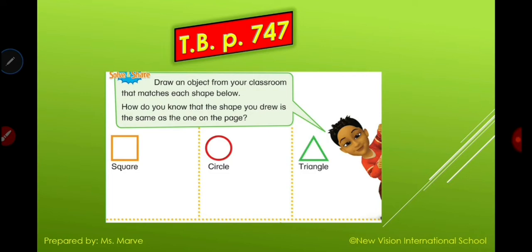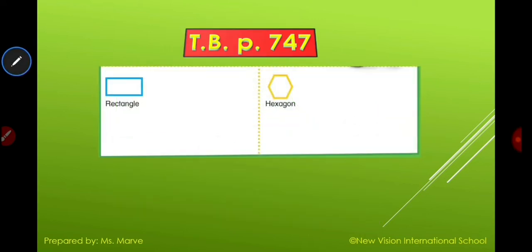The question is: draw an object from your classroom that matches each shape below. How do you know the shape you drew is the same? Again, what are you asked to find? Objects shaped like the shapes on the page. How do you know about the shapes? They have different numbers of sides and corners, and the round shape has no corners. You can see the rectangle and the hexagon below. I'll give you three minutes to answer that one.